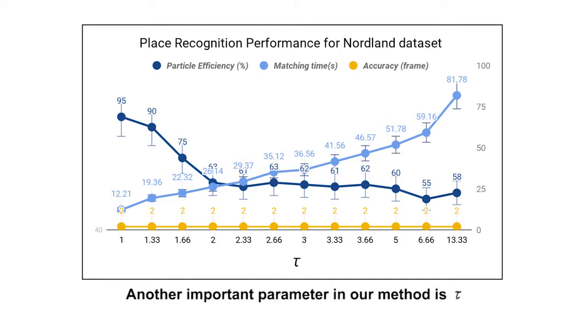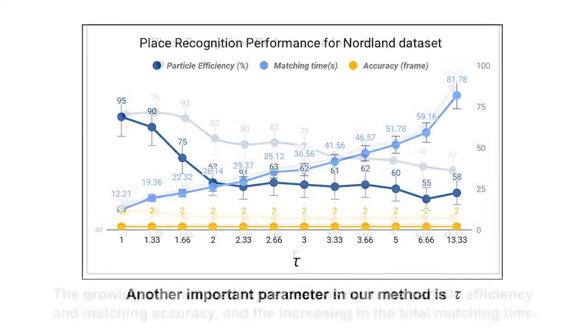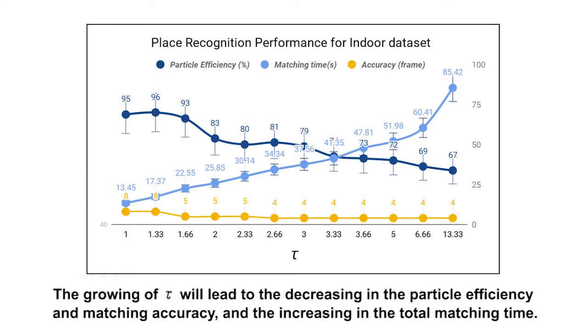Another important parameter in our method is tau. The growing of tau will lead to the decreasing in the particle efficiency and matching accuracy, and increasing in the total matching time.